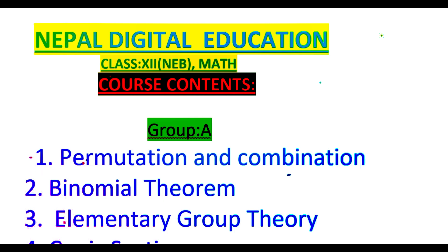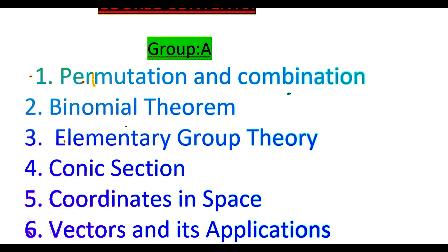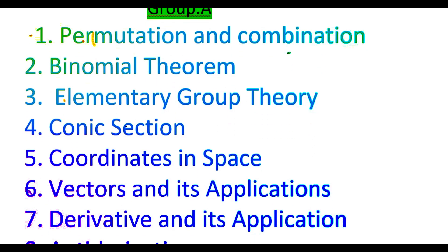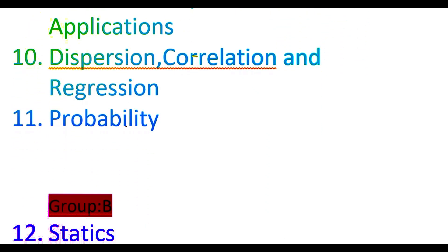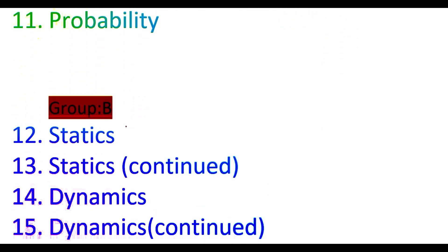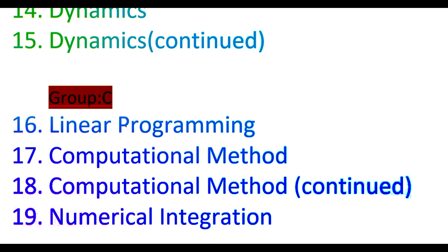Mathematics of class 12 of science stream has three groups. All the topics have been divided into three groups. Group A contains altogether 11 topics, group B contains four topics, and group C contains four topics.